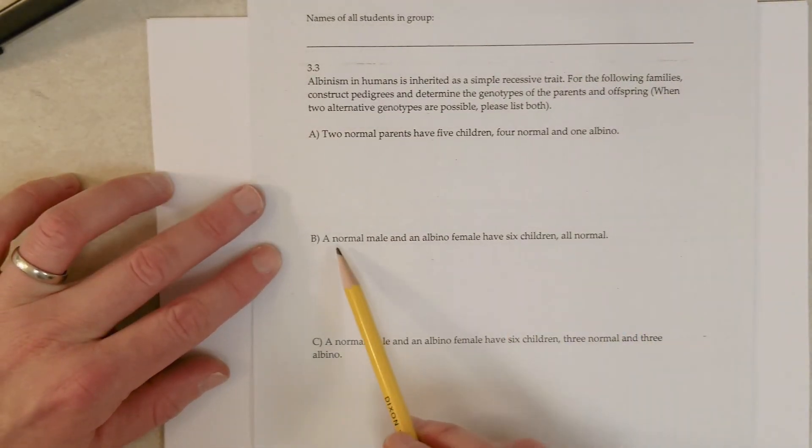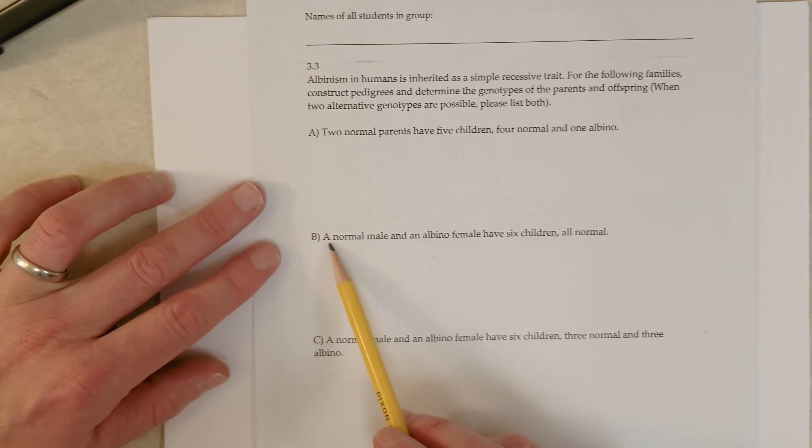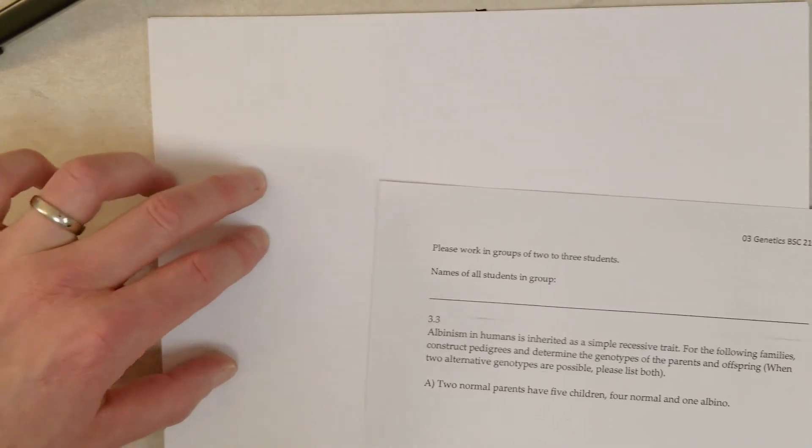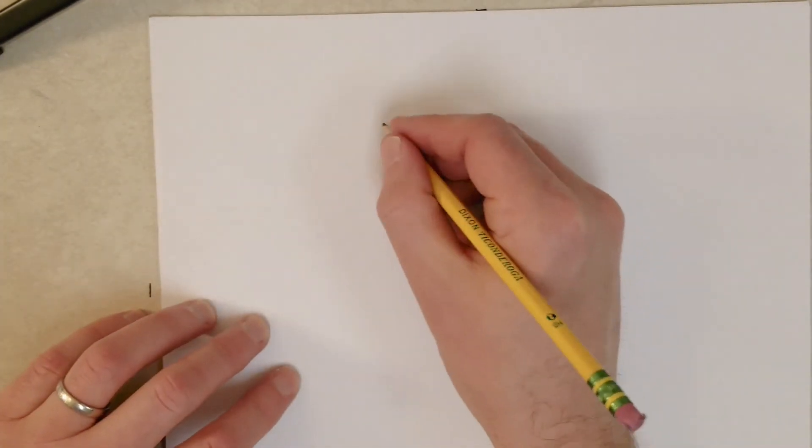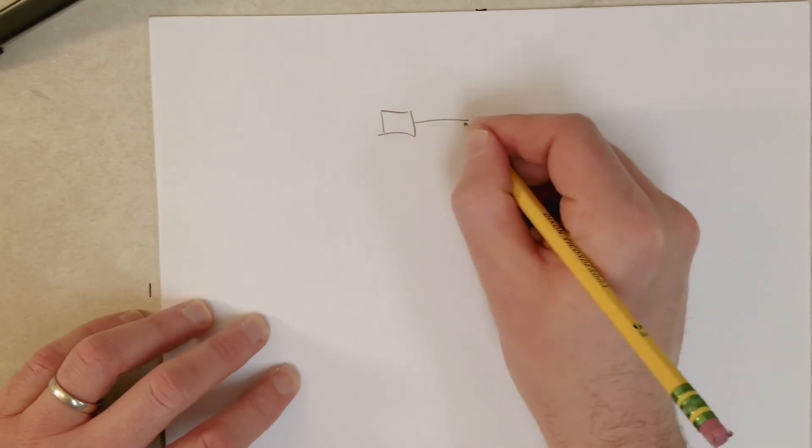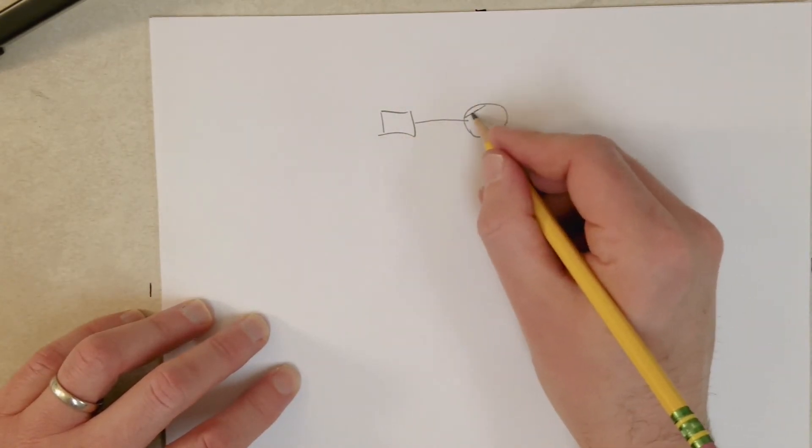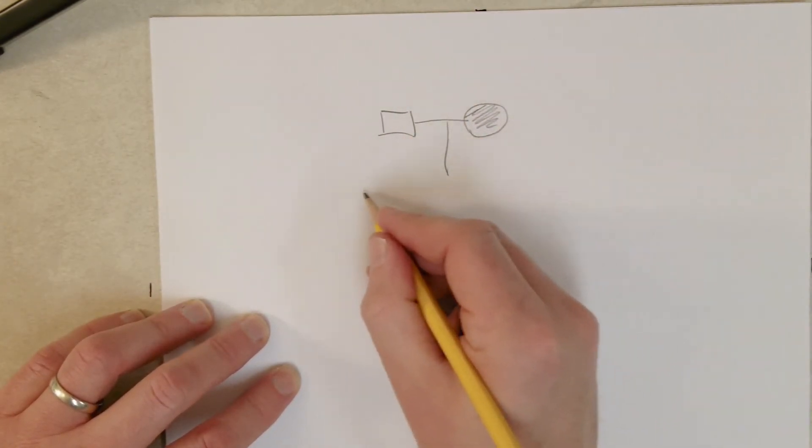I can take a look at another problem here while I'm here, it won't take that much longer. So another pedigree: a normal male and an albino female have six children, all of them are normal. So what would this pedigree look like? Normal male, albino female, six kids.